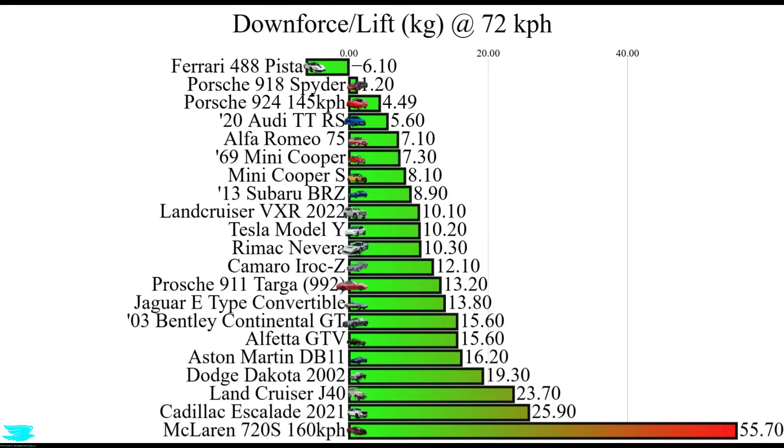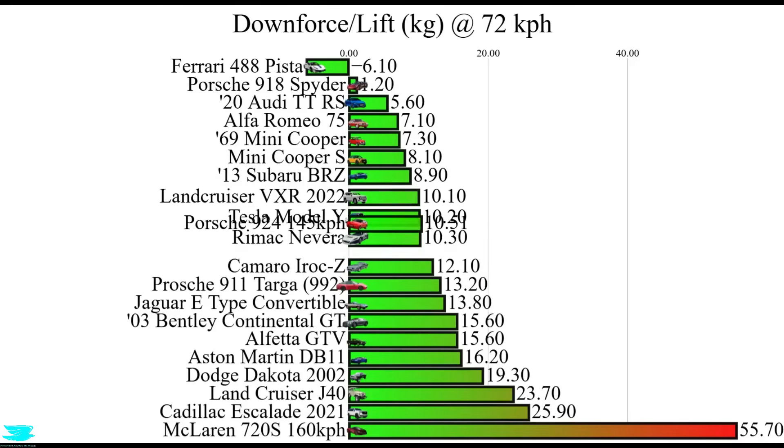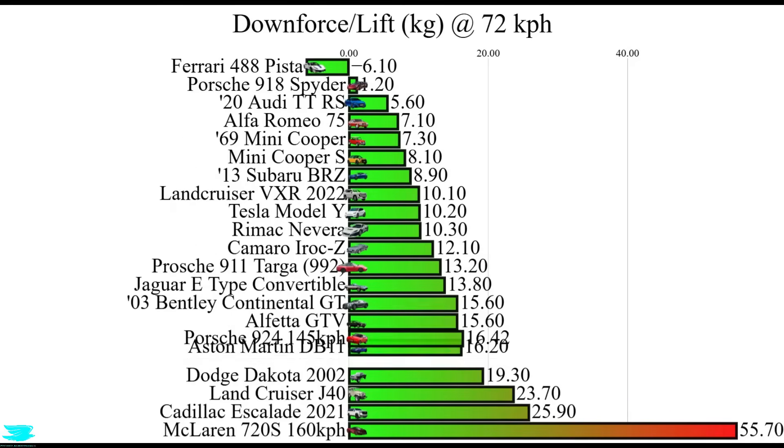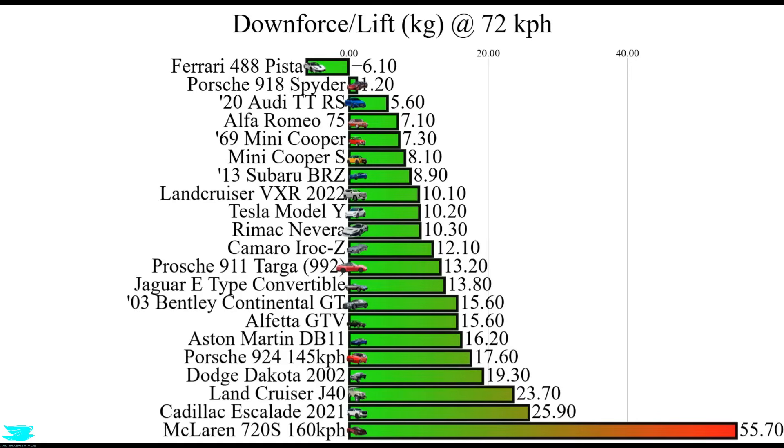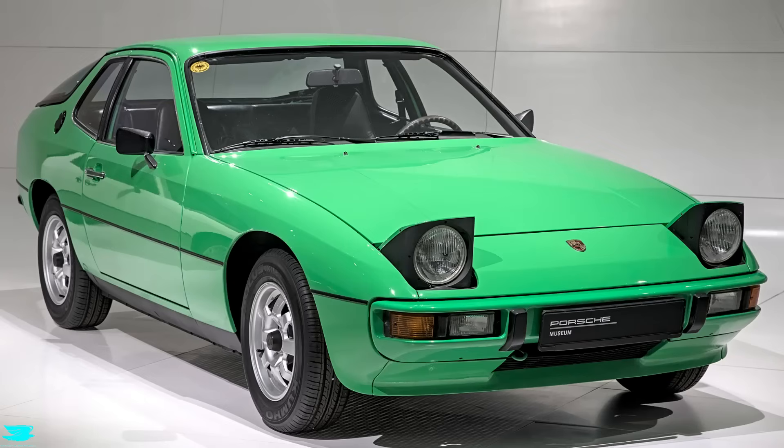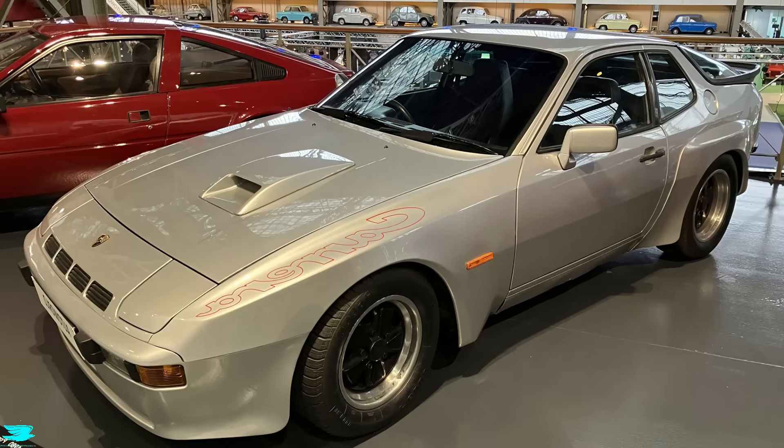For the lift, remember that this is at 90mph, so it produced 17.6kg, about as much as a large chicken wing. If we scale this back to what it would produce at 72kph, like other cars on the list, the lift will come in at around 4.5kg, which is decent. The Porsche 924 was definitely ahead of its time in terms of aerodynamics. If you're staying on YouTube, YouTube thinks you'll like this video, so check it out. Peace out, amigos!